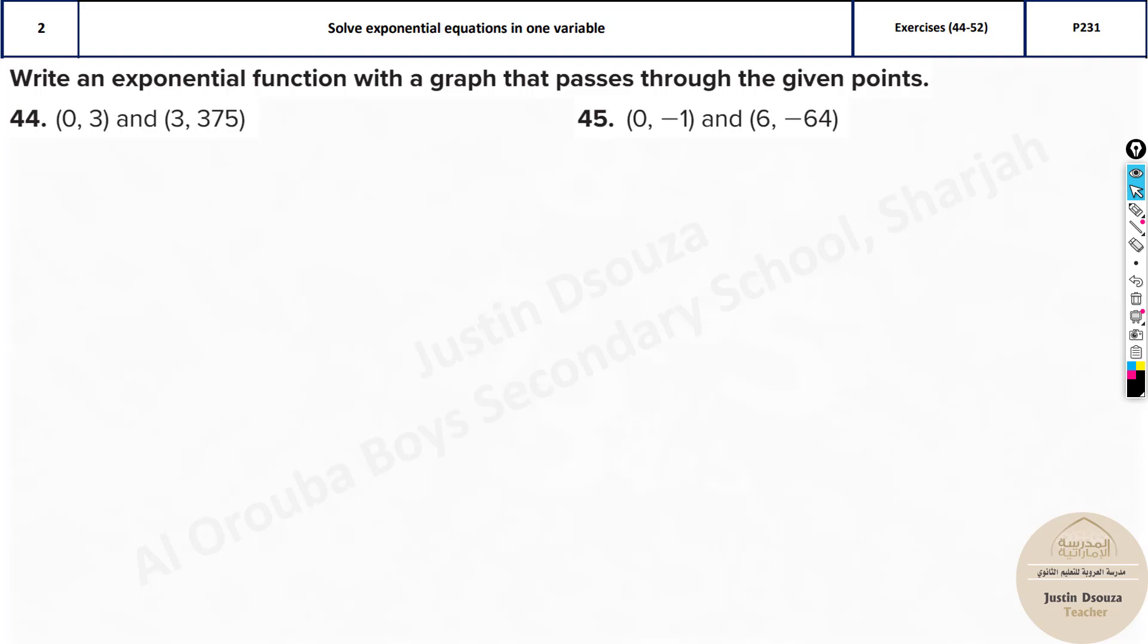Now look carefully to the points. What's given exactly? It's (0, 3) and (3, 375). Same thing over here. There is a 0 point and then there are other three values. There are two points. If I go to the next problems you will always see there is 0, x as 0 and then some value of y.